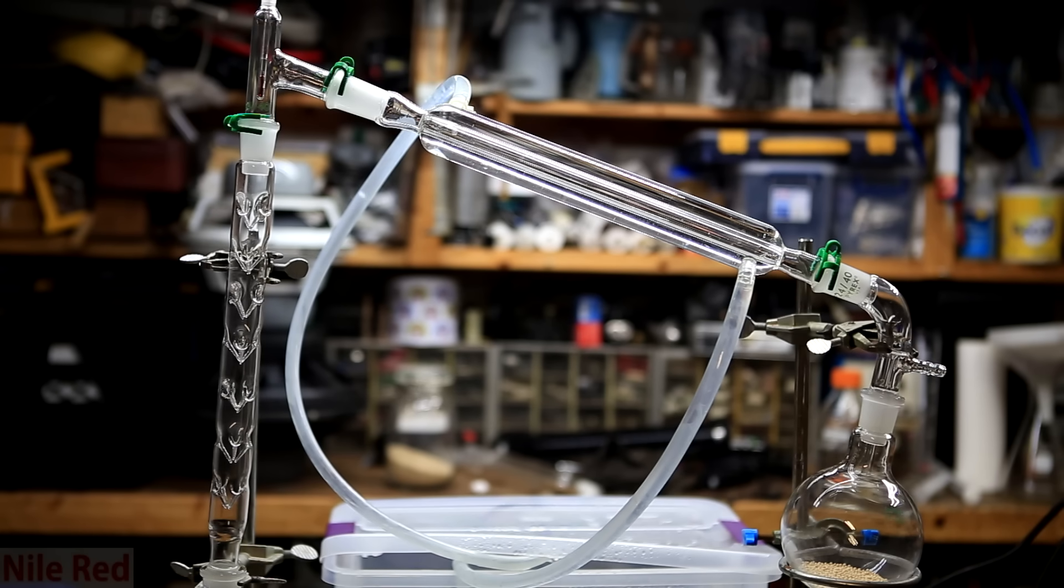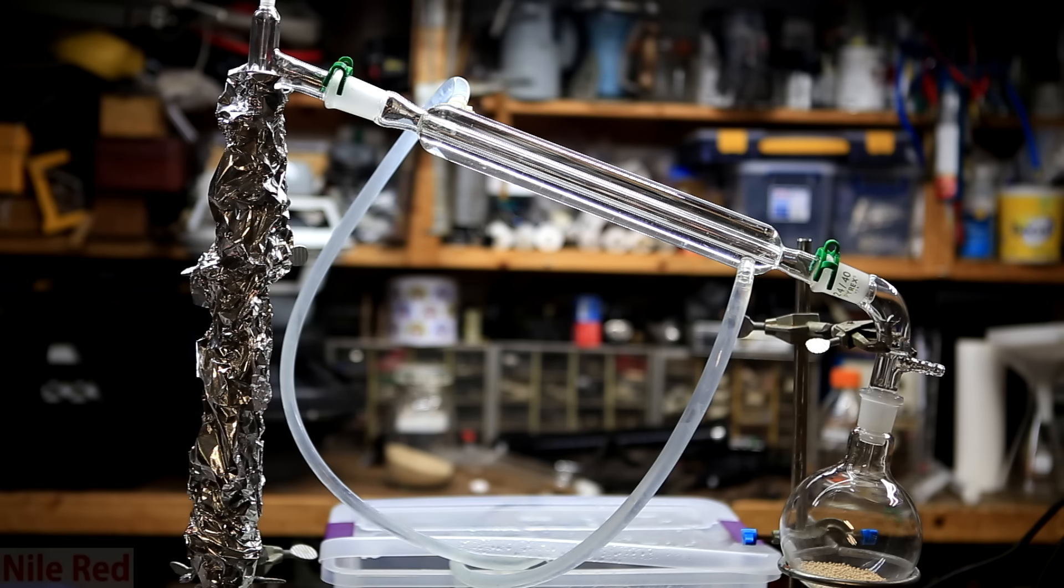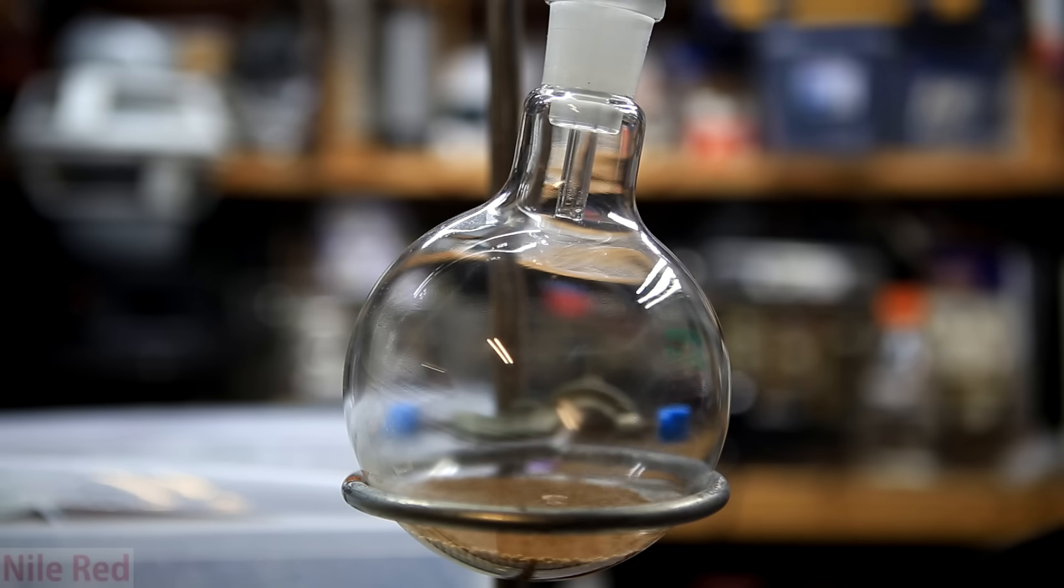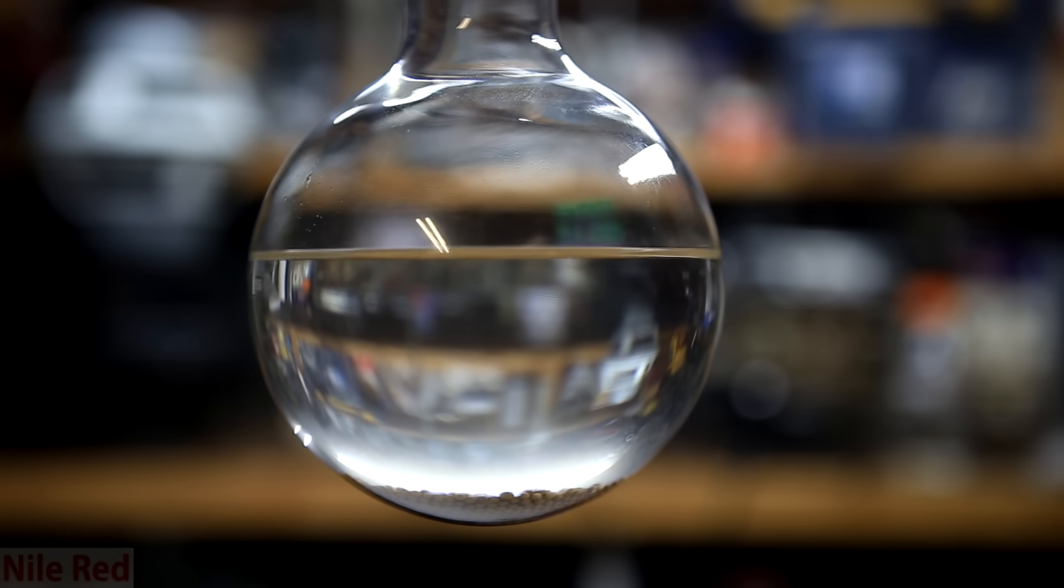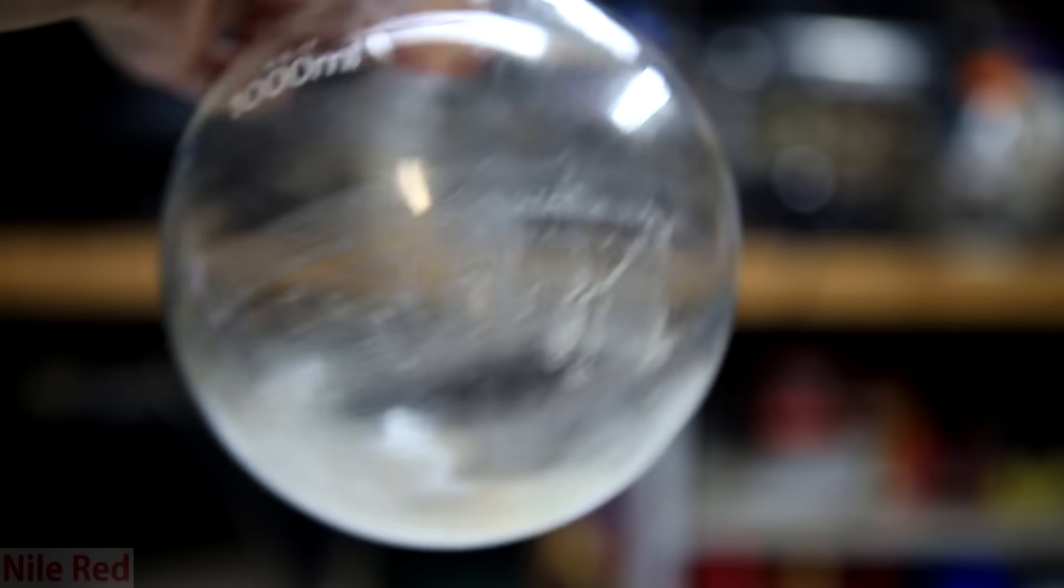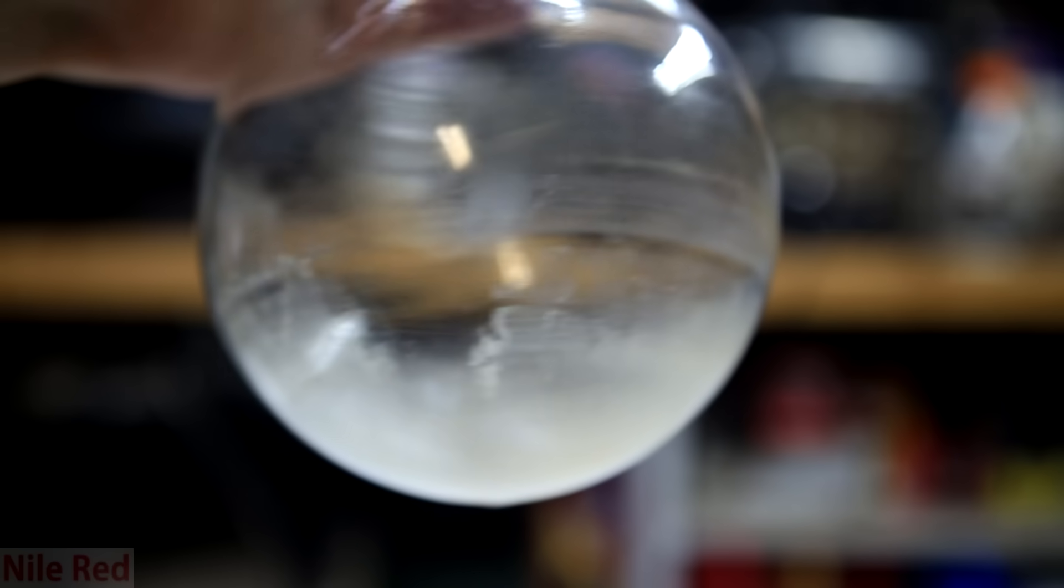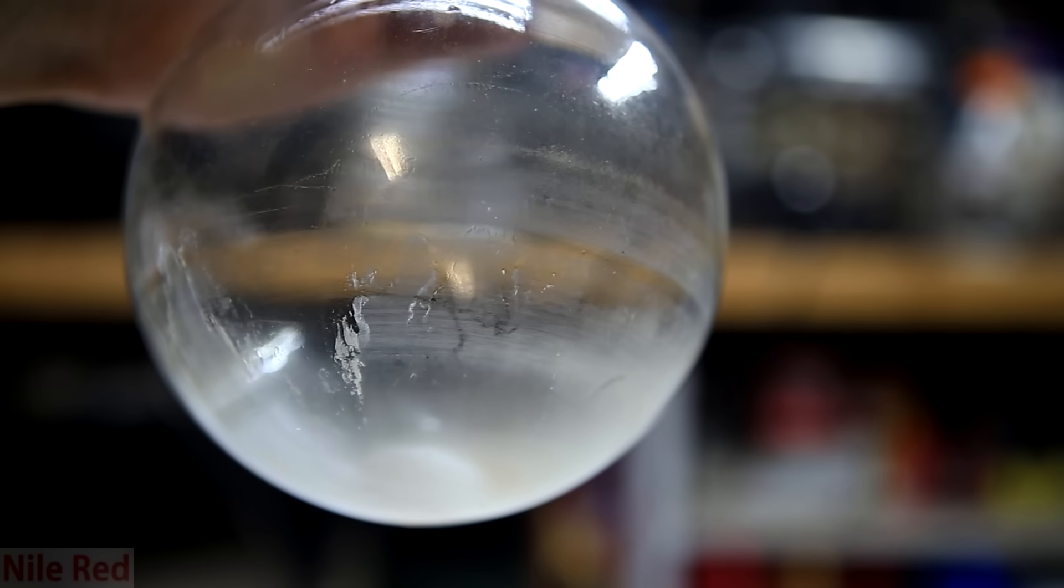So this is what the upper part of the distillation looked like prior to wrapping it with aluminum foil. The column was then wrapped with aluminum foil to insulate it and help the ethanol pass over. You can see that the receiving flask is packed with sieves to keep the ethanol that comes over dry. Eventually all the ethanol comes over and it should be pretty much 100%. At the bottom of the distillation flask, we're left with a mixture of the denaturing agents and the molecular sieve powder.